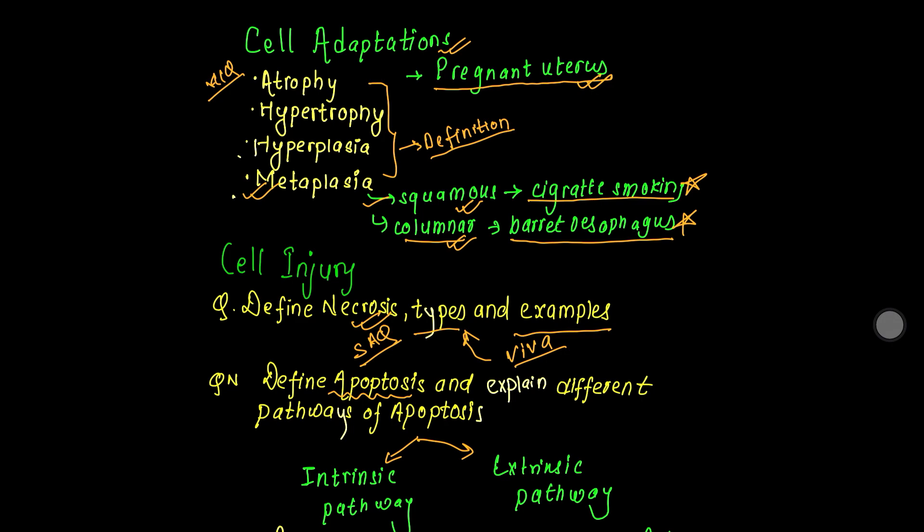We are going to talk about the topics for MCQ, and the most important topic in cell adaptation is metaplasia. Metaplasia — the classic MCQ example is columnar to squamous change. This is a maximum-time repeat question.